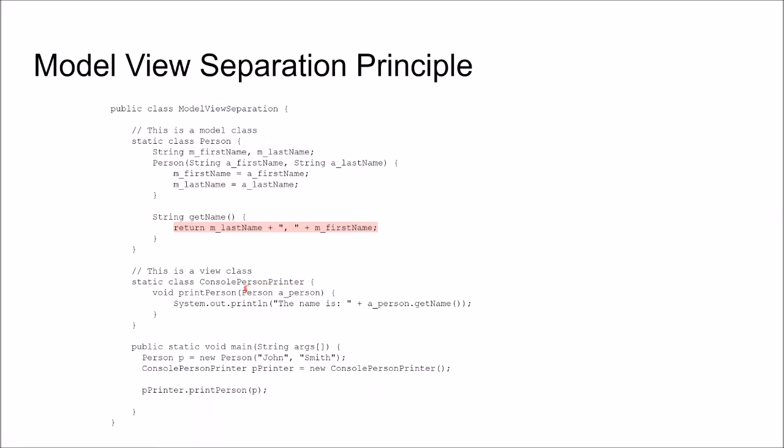Instead of taking a string as an argument here, we just send in the person and let this console person printer get the name from the person and print it. We have separated the model from the view. There is no call from the model class to the view class.